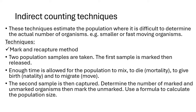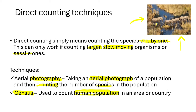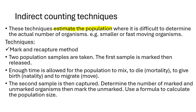Now we have indirect counting techniques. Indirect counting techniques are used to estimate the population — we do not actually get the actual size of the population. Unlike direct counting where we counted all five elephants precisely, in indirect techniques we just estimate the population size. It is not an accurate measure — it is just an estimation. It is not really exact, but it is closely true.